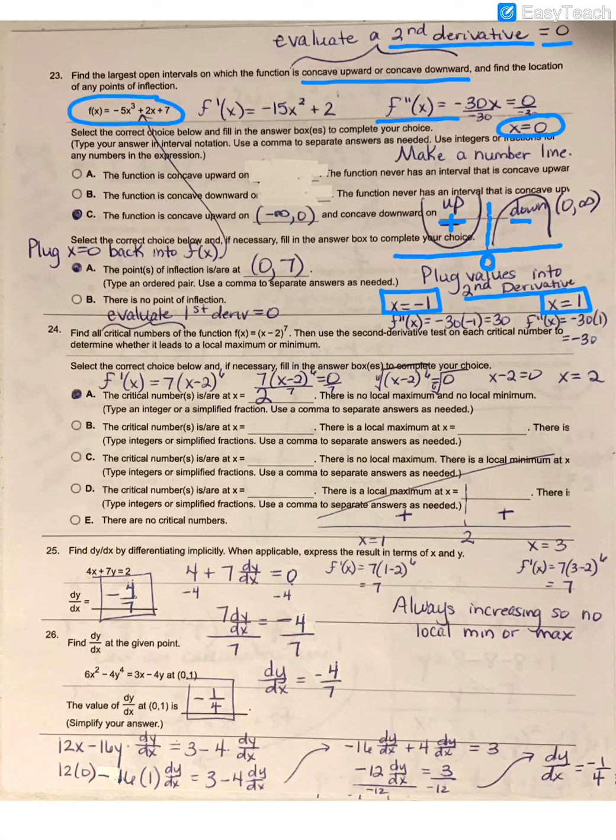So we say that the function is concave up from negative infinity up to 0, and it does not include 0, so make sure you're putting parentheses. And it's concave down starting at 0 and going to infinity.